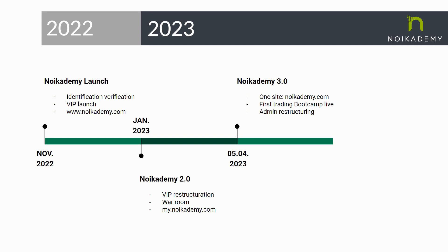If you go to May 4th, this is a very important day. This is the date we finally launched a consolidated website. So instead of having two websites — www.noacademy.com and my.noacademy.com — we combined both into one website, which is just noacademy.com. So if you go to this website and type noacademy.com right now, it gives you all the things you need to do to sign up and go through everything.